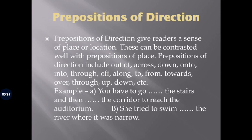In the second fill-in-the-blank: she tried to swim — fill in the blank — the river where it was narrow. Again, physically she has to cross the river, pass through it. So the answer is 'through'. She tried to swim through the river where it was narrow. We have seen how these words can be used in prepositions of direction.